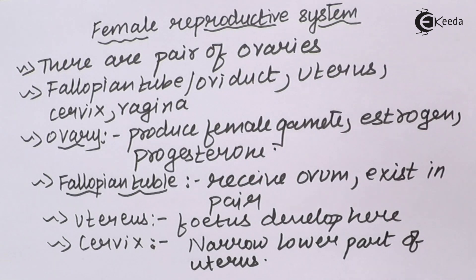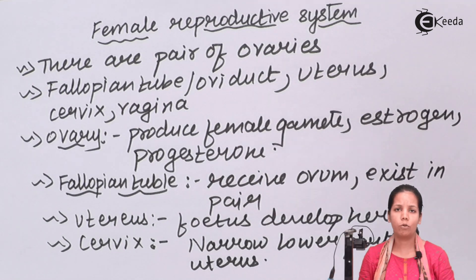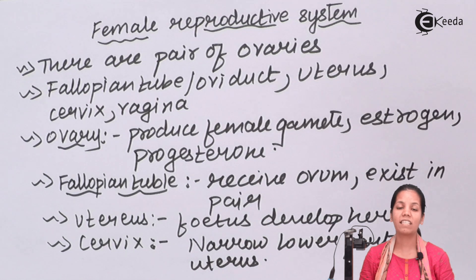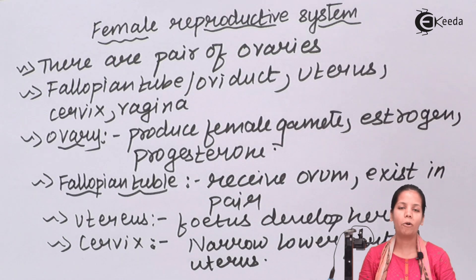So students, in this part of the chapter we covered the female reproductive system and where the egg cell is formed. The uterus is very crucial — it contracts whenever a child is born during the delivery process, and formation of eggs takes place in the reproductive tract. I hope you are clear with this concept. Thank you.